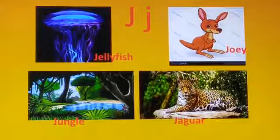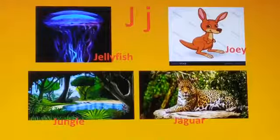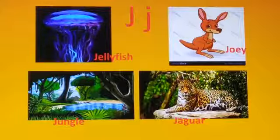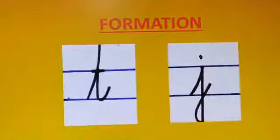Jaguar: Jaguar is a wild animal that has dark spots all over its body. Now, let us learn to write small cursive T and small cursive J in the four line format.